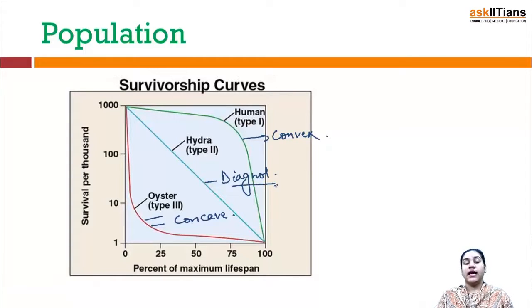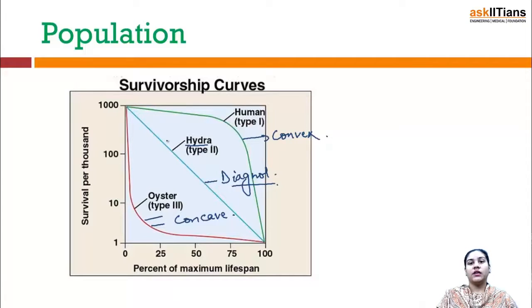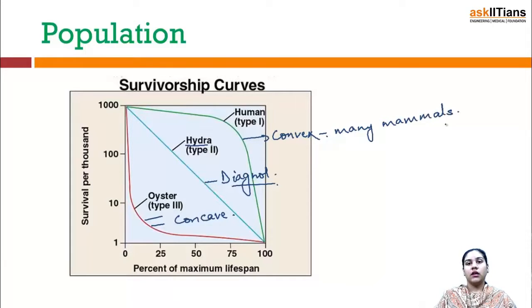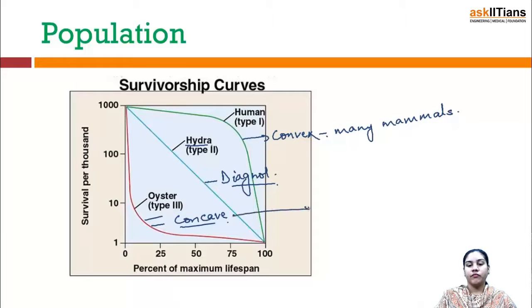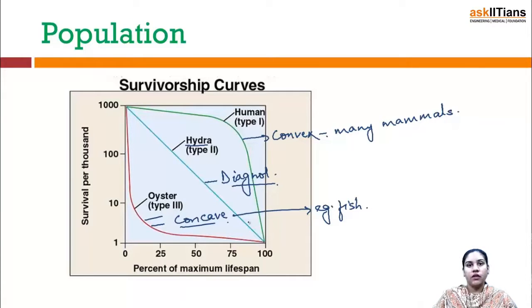In the diagonal curve, the example is hydra. In this curve, organisms of different age groups have equal death rates, so it is plotted as a straight line. In the convex curve, the examples include human beings and many mammals. In this curve, the organism first completes its potential life span and then dies in old age, giving a convex shape. The third curve is the concave curve, with examples including fishes, insects, oysters, etc. In this curve, organisms die before completing their potential life span.